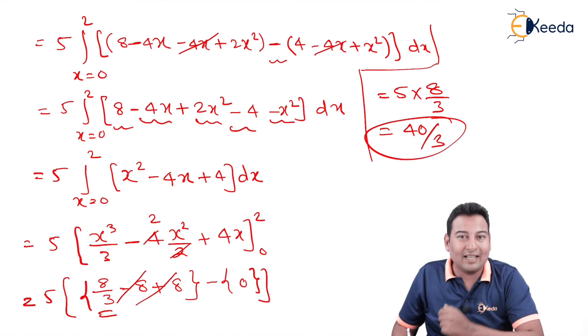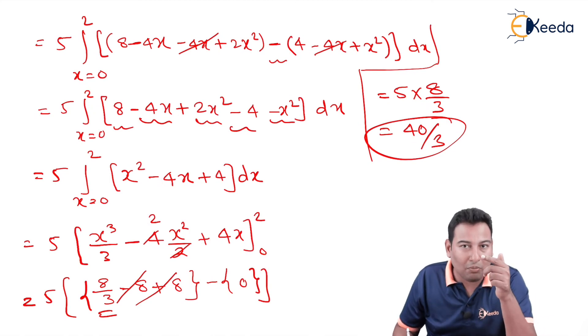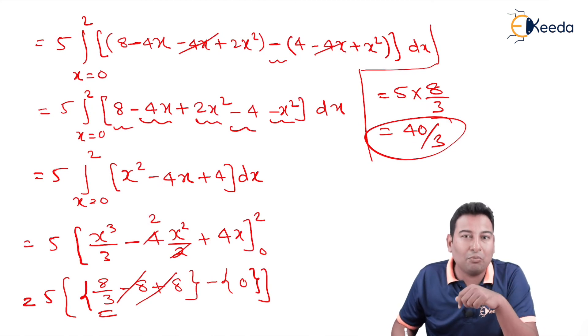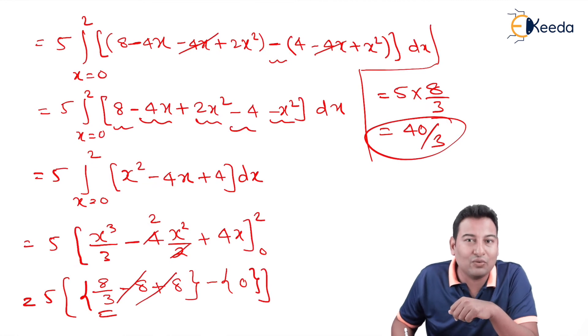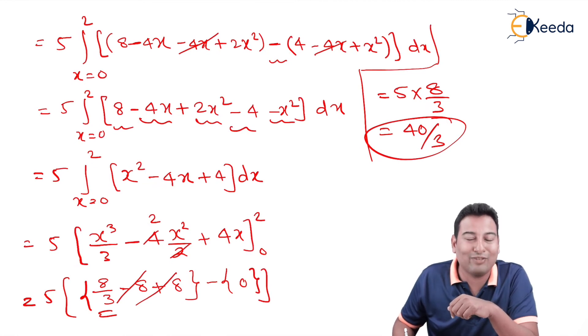We got the answer: 40/3. We can categorize this problem along with Problem 1 as Type 1 problems. Hope you understood. In the next videos, we will discuss a few more examples. Thank you.